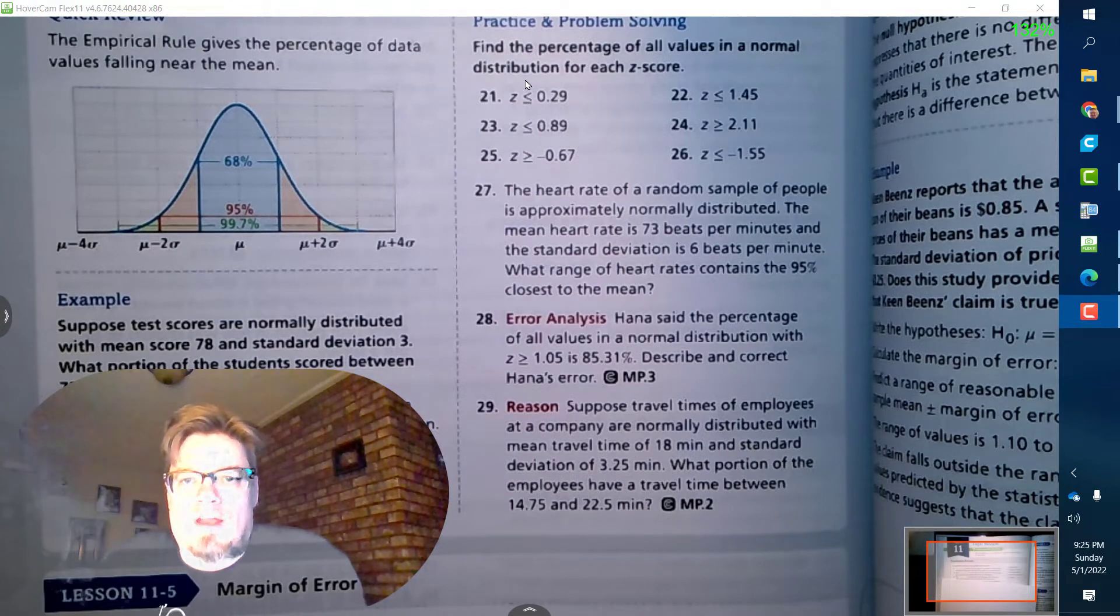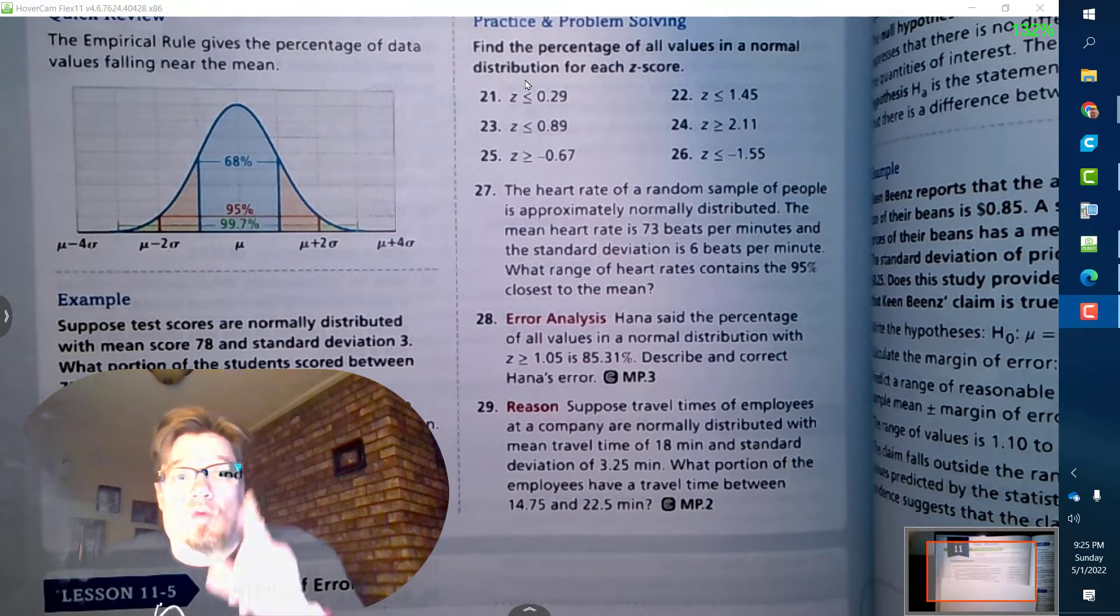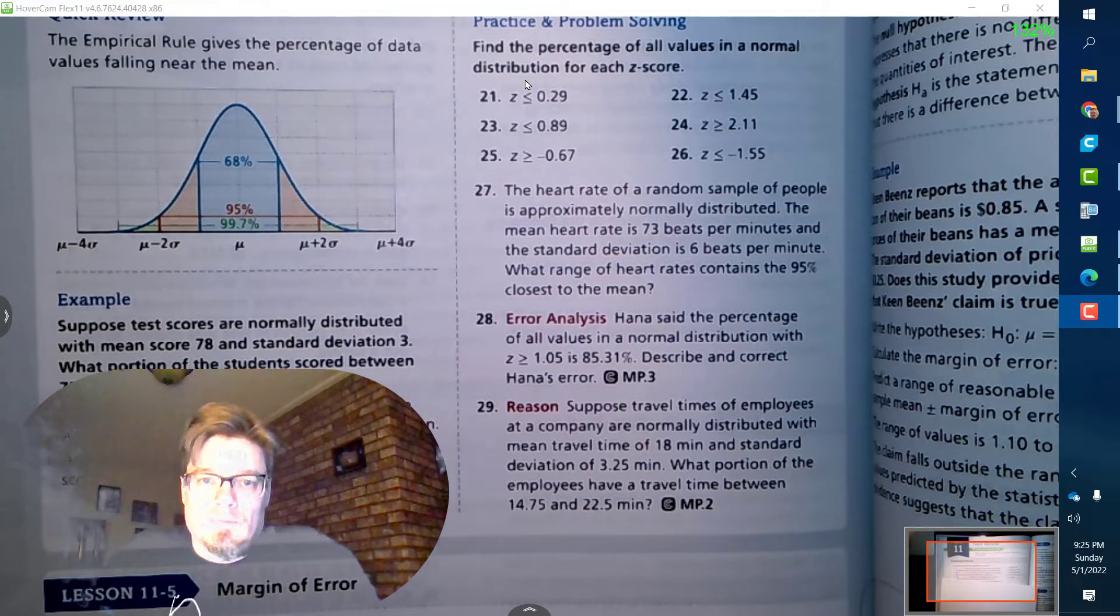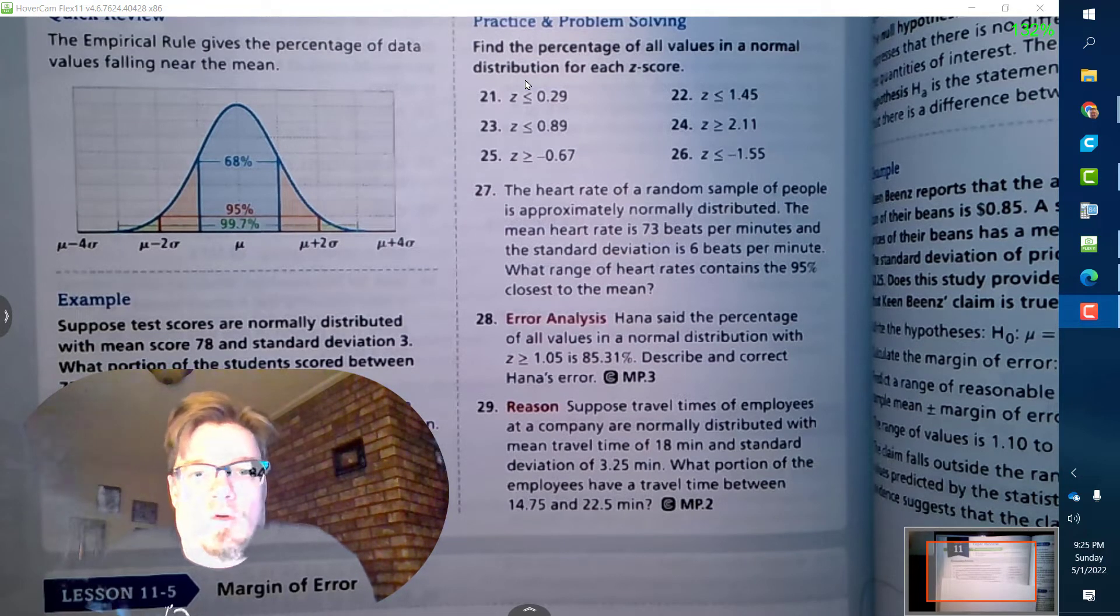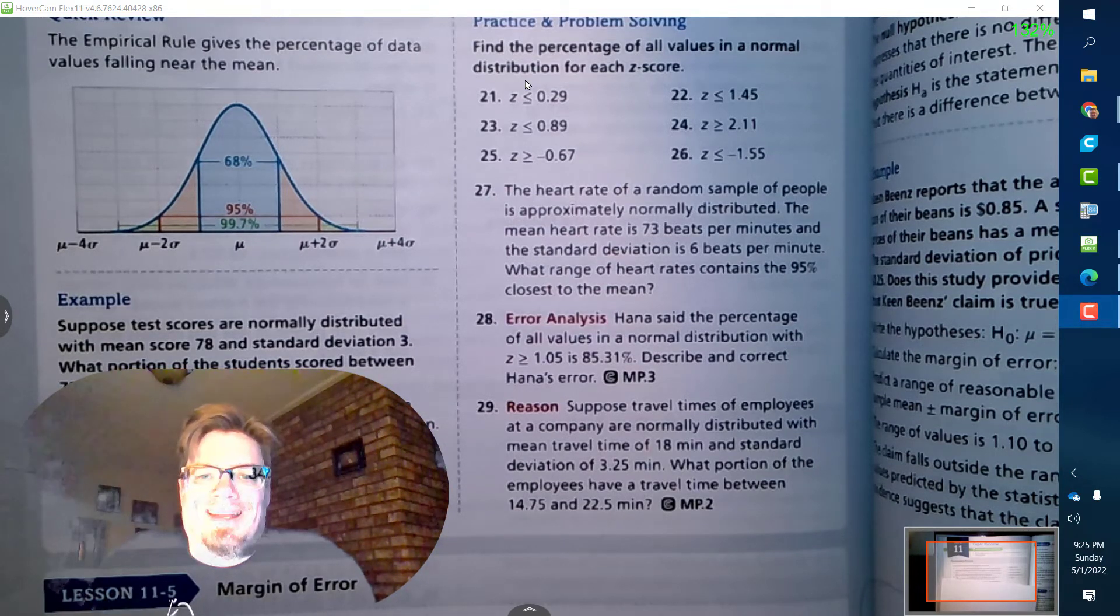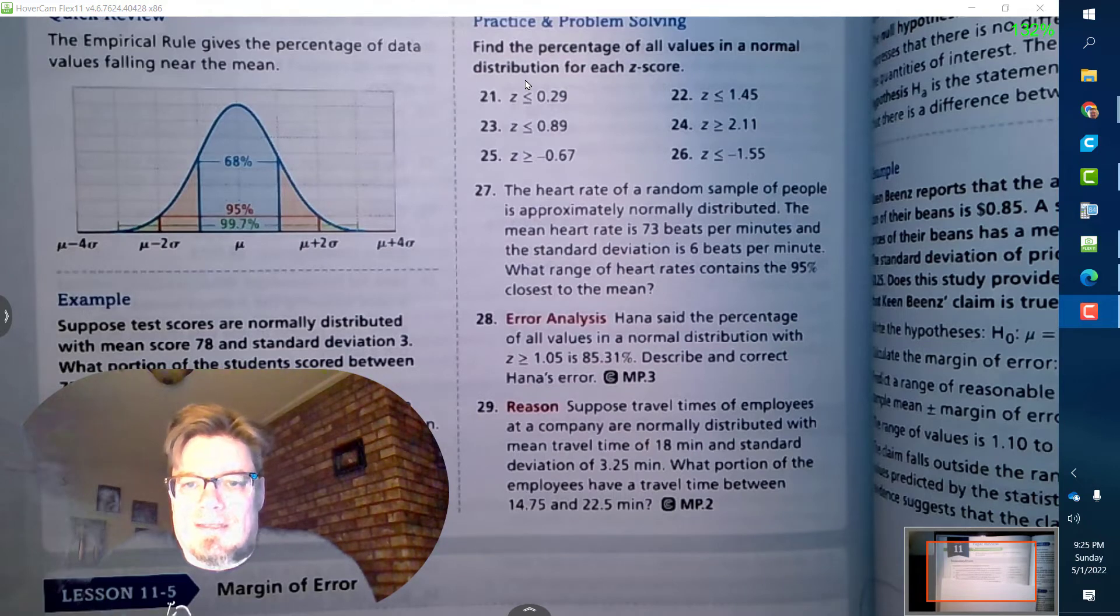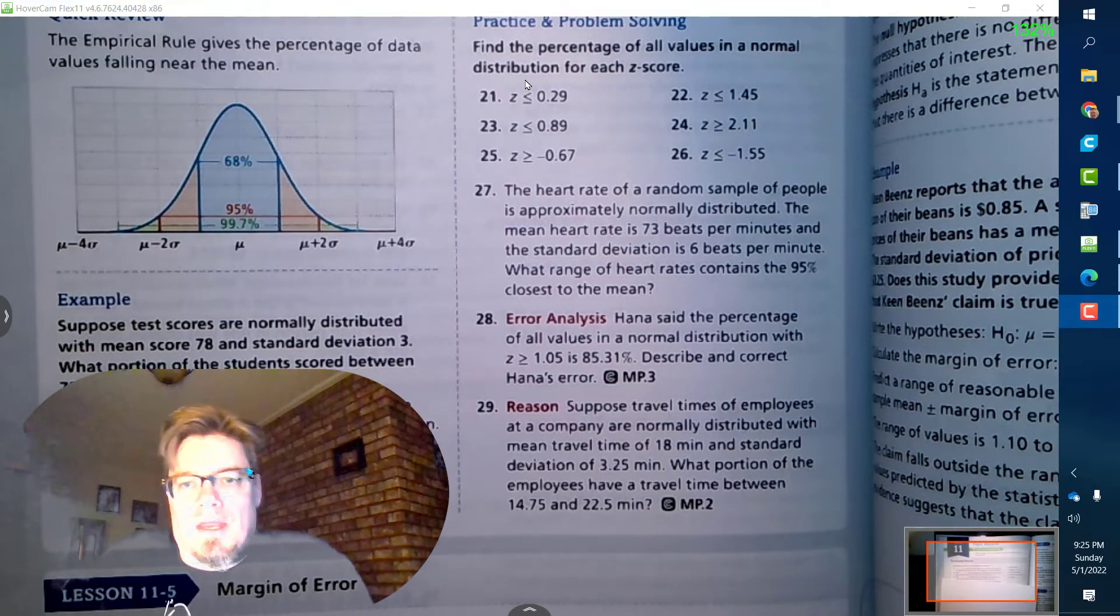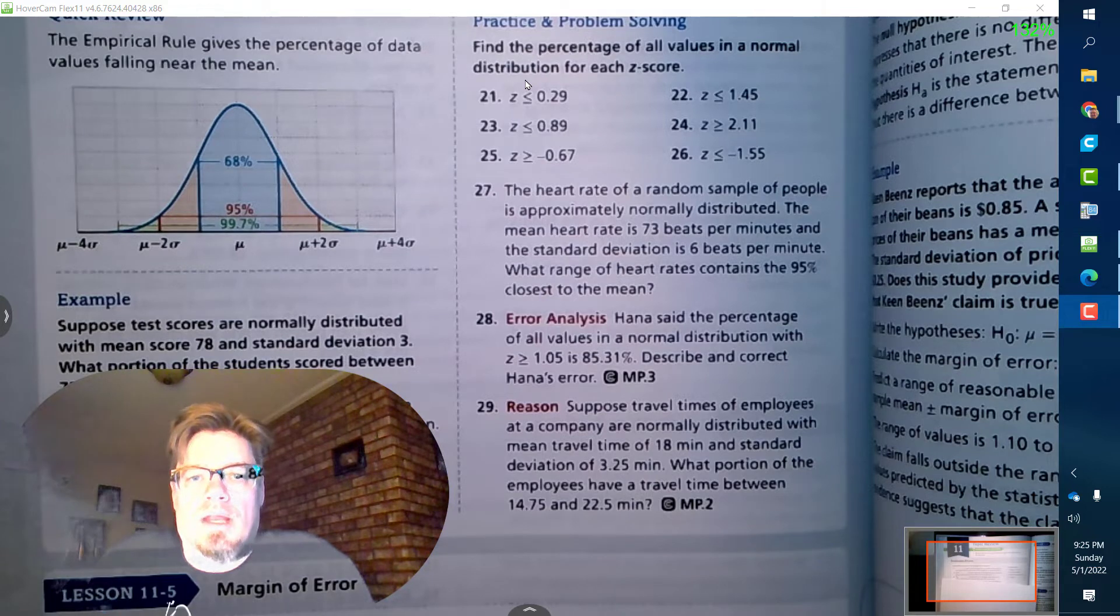Number 27: The heart rate of a random sample of people is approximately normally distributed, which means we can use the z-score chart. The mean heart rate is 73 beats per minute and the standard deviation is 6 beats per minute. What range of heart rates contains the 95 percent closest to the mean?